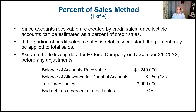Let's start with the percentage of sales method, which is straightforward. Since accounts receivable are created by credit sales, uncollectible accounts can be estimated as a percentage of credit sales, as that portion is relatively constant. Assume the following data for X-Stone Company on December 31st, year two, before any adjustments: accounts receivable of $240,000, allowance for doubtful accounts of $3,250, total credit sales of $3,000,000, and bad debt at three-quarters of one percent of credit sales.